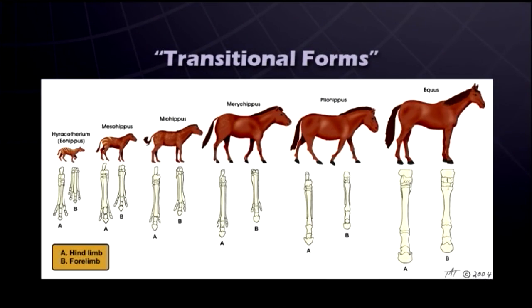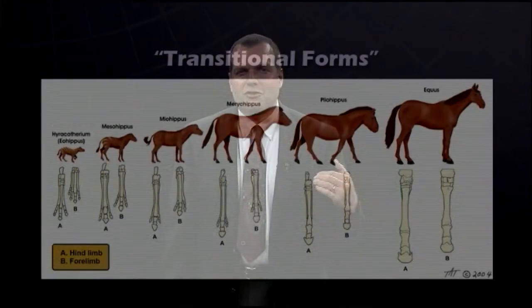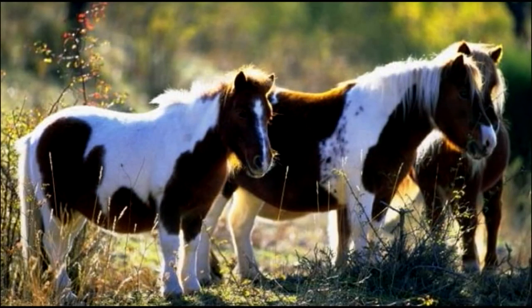We used variation within the dog kind as an example, and that type of thinking actually occurred in the 20th century with the famous horse series. The horse series was suspected to be false and fraudulent as early as 1920, but was taught as fact throughout the 20th century and only recently removed from the Smithsonian Museum of Natural History. Fossils that were obviously just variations within the horse kind were pieced together to imply ongoing evolution of the horse — examples of people looking for what they want to find and thinking they found it, when in reality all they were seeing was variation within a kind.